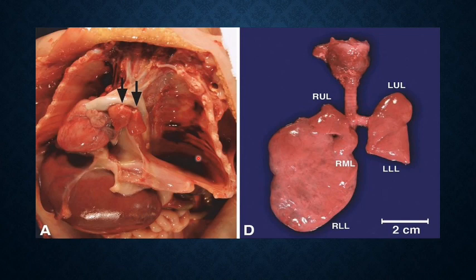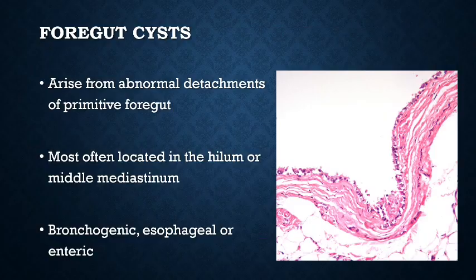There is an empty thoracic cavity as you can see here. In this picture, this is your trachea with the larynx. The right lung is well-developed but the left lung is hypoplastic. This is your pulmonary hypoplasia.